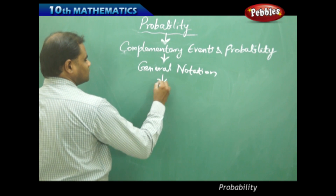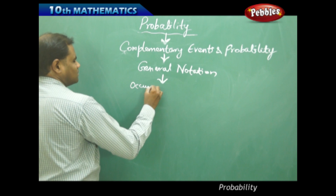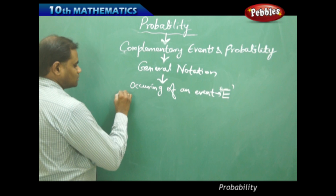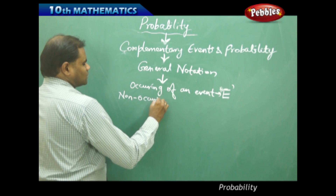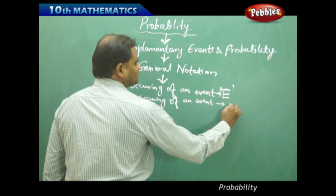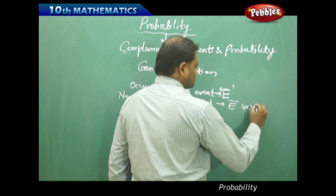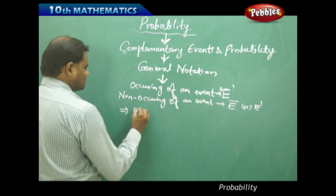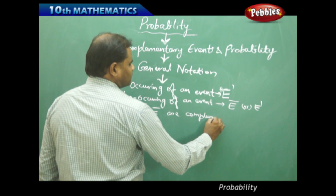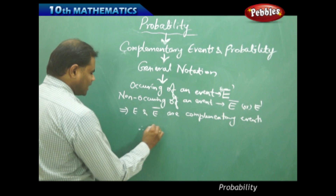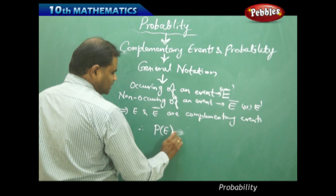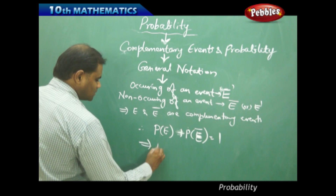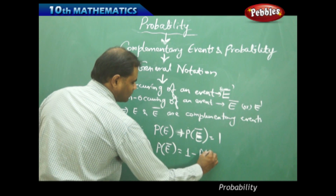The occurring of an event is denoted as E, and the non-occurring of the same event is denoted as Ē (E-bar) or E-complement. In this case, E and Ē are complementary events. Therefore, the formula is: P(E) plus P(Ē) equals 1, which means P(Ē) equals 1 minus P(E).